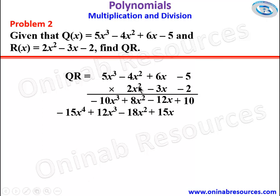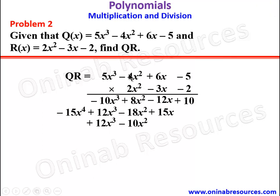Then we go to 2x squared. 2x squared multiplied by negative 5 gives negative 10x squared, placed under the negative 18x squared. Then 2x squared multiplied by positive 6x is 12x cubed, placed under the 12x cubed. 2x squared multiplied by negative 4x squared gives negative 8x to the power 4, placed under negative 15x to the power 4. Then 2x squared multiplied by 5x cubed gives 10x to the power 5. Then we add.